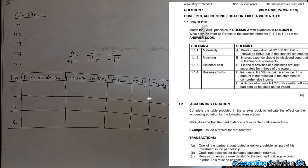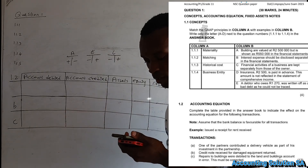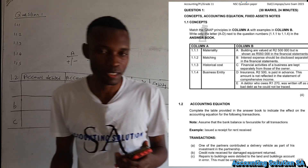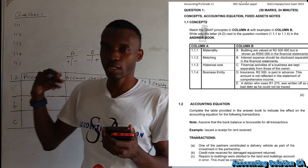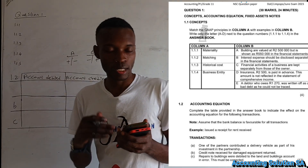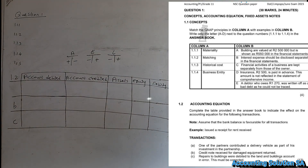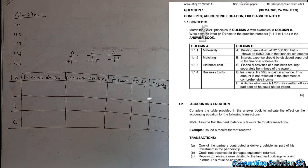Number one, we have to match Column A with Column B. We have materiality, matching, historical cost, and business entity. The major goal here is not just to get the answer but to understand the principle. Number A states: a building is valued at 2500 but is shown as 550 in the financial statement.